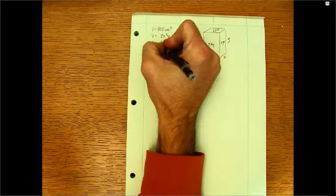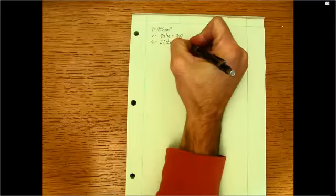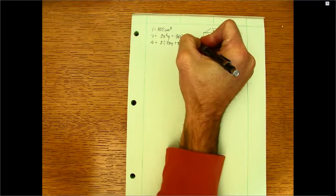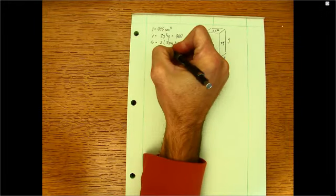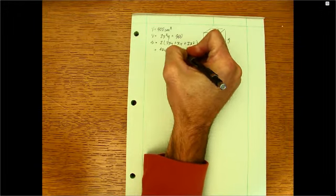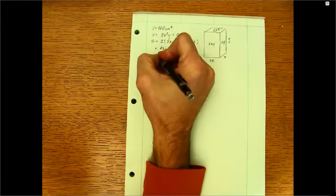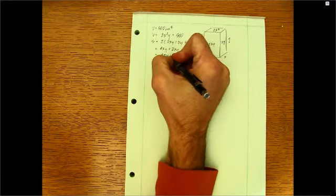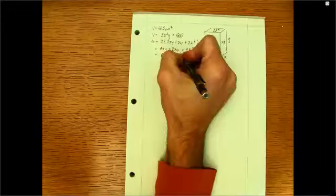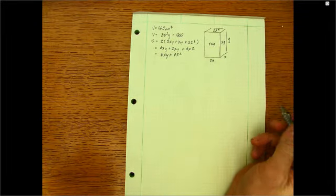So I'm going to use this as my expression, 2 times 2XY plus an XY plus 2X squared. And when I distribute the two, of course, I get 4XY plus 2XY plus 4X squared. And when I add the two XY common terms, we get 6XY plus 4X squared as our surface area expression.